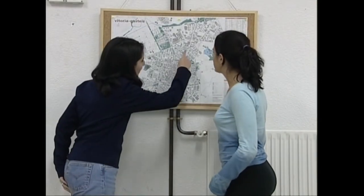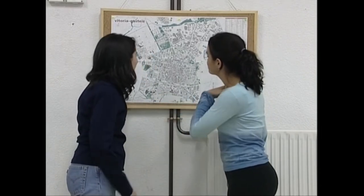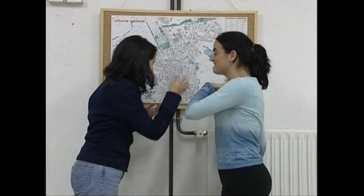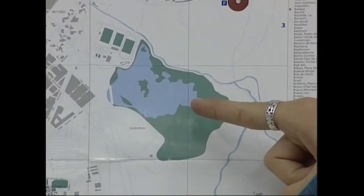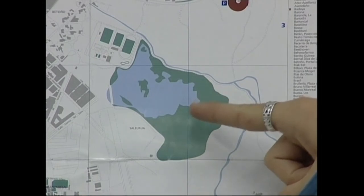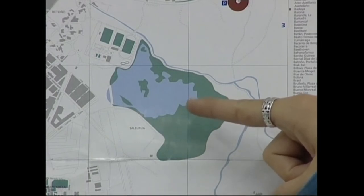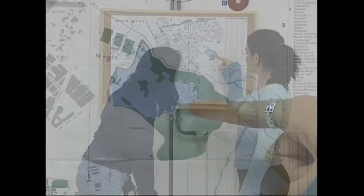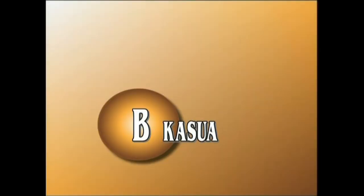Eskena, honelako plano batez hasiko dugu. Aktore batek beste bati zerbait esaten dio. Atzean, mapa bat dago. Informazioa zehazteko, maparen gainean puntu bat zeinalatzen du. Une horretan mozten dugu, eta aktorearen ikuspuntutik hartutako txertatzeko plano bat sartzen dugu. Plano honen bidez, informazio garrantzitsu bat nabarmentzen dugu. Jarraian, hasierako plano orokorrera itzultzen gara. Txertatzeko planoak bi aldizere sar daitezke, plano orokorrak irauten duen bitartean.